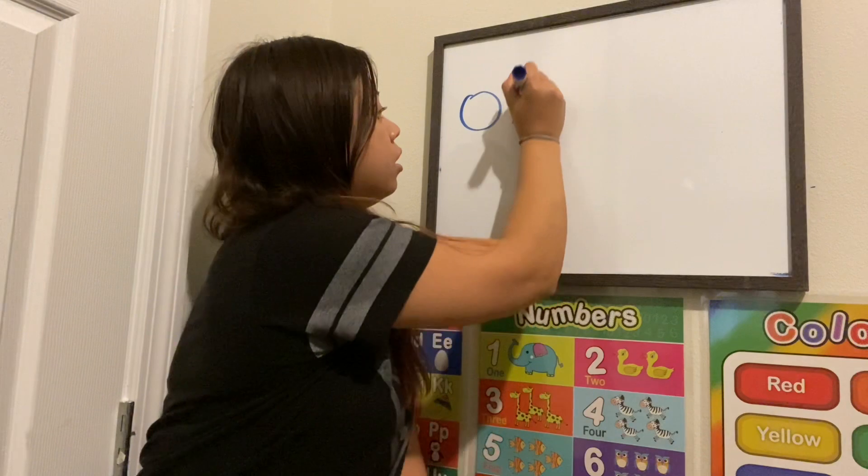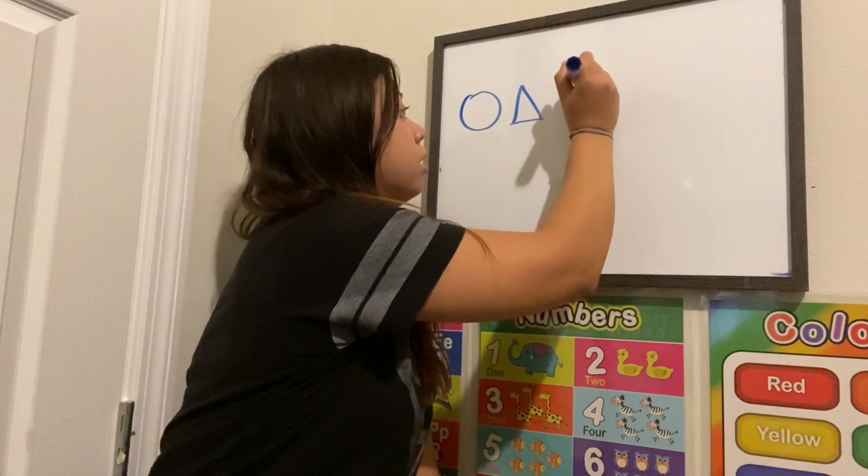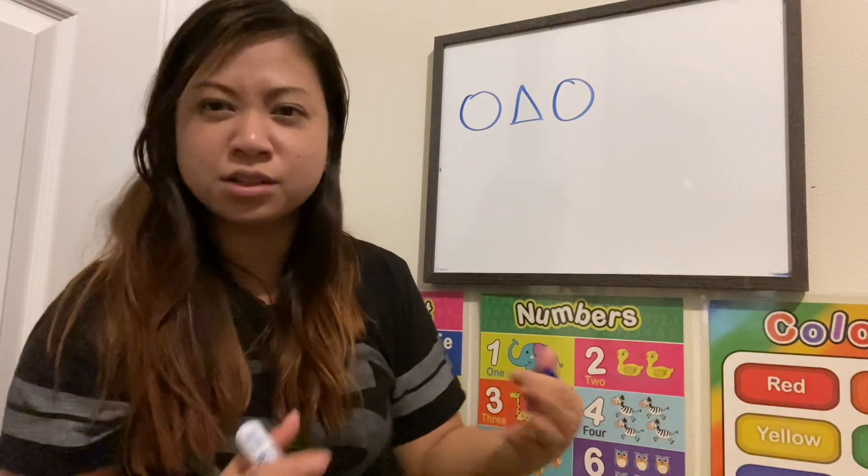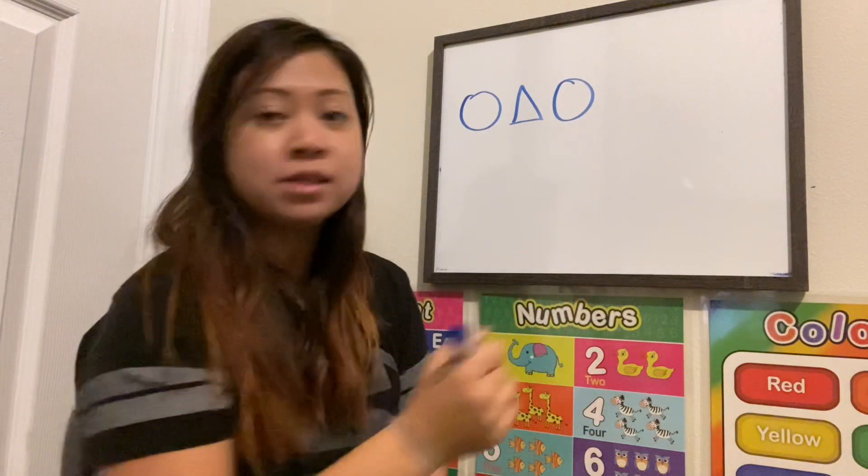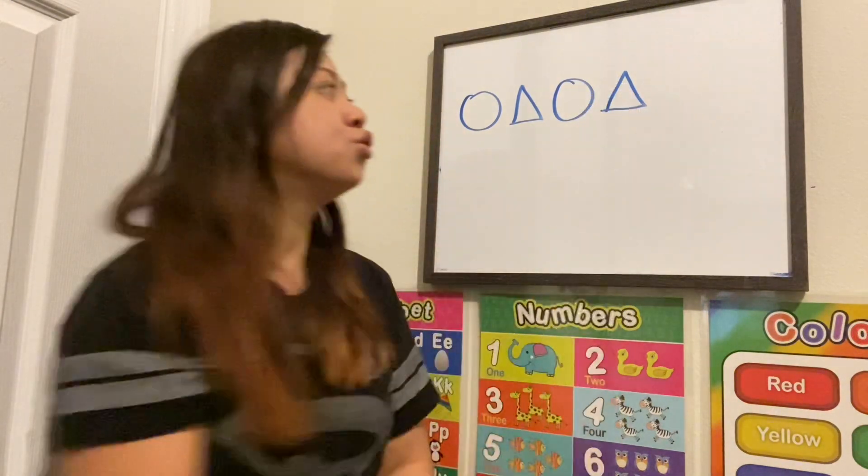I'm going to use the shape circle and then a triangle, another circle. My circles are not perfect but it's okay, we're doing our best, and a triangle. So you see a circle, a triangle, a circle, a triangle, so you see that it's repeating.